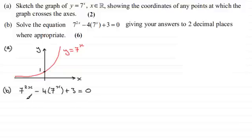And what I'd want to do is change this 7 to the power 2x. See this as 7 to the power x all squared. We generally do this in these types of questions. And here we've got 4 times 7 to the power x. Just leave that as it is. And then plus 3 equals 0.